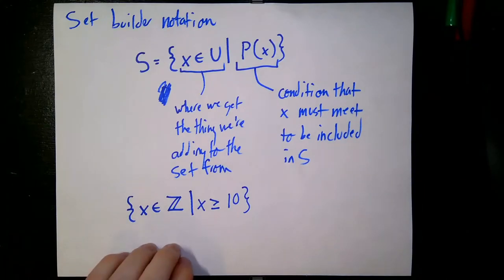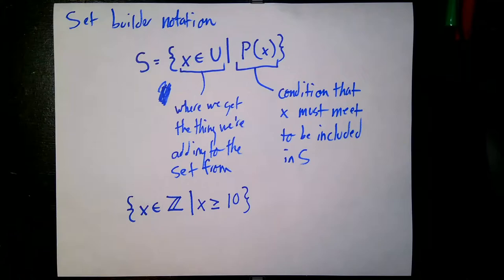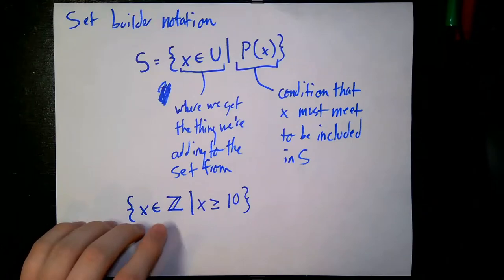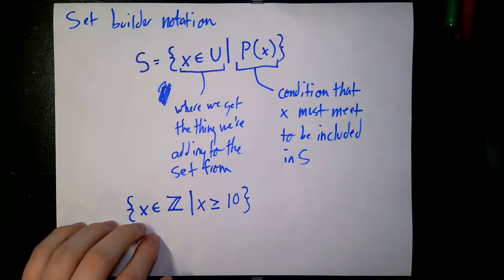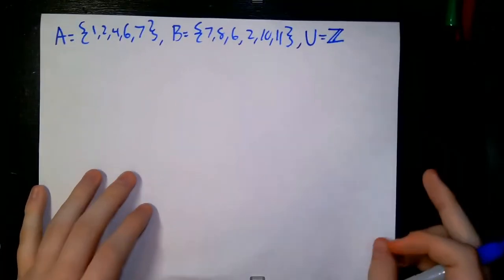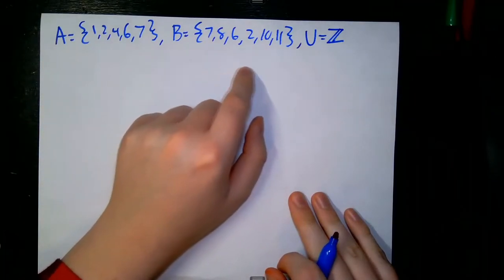Set builder notation will be really helpful when we start talking about operators. An operator takes in one or more objects of a certain type and outputs one object of the same type, transformed from the inputs. We're going to use set builder notation to define set operators — operators that take in one or more sets and give us back a set. To get us started, I have a couple of example sets: A is the set {1, 2, 4, 6, 7}, and B is the set {7, 8, 6, 2, 10, 11}.